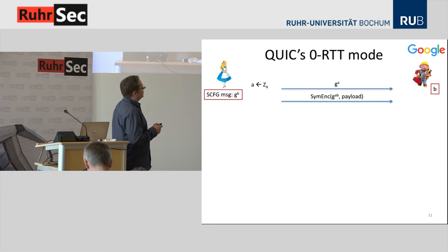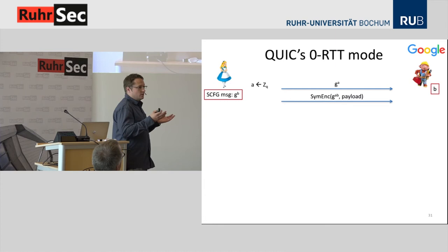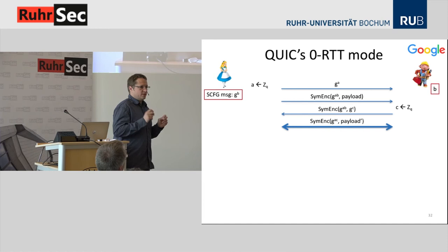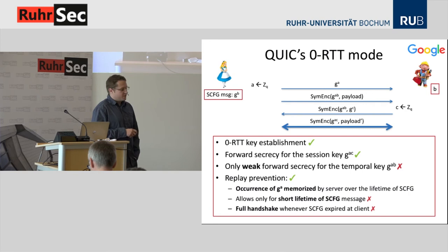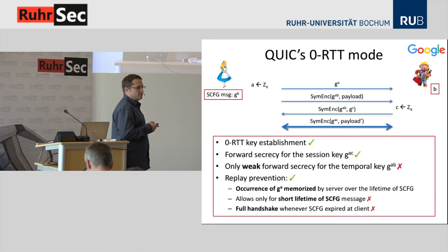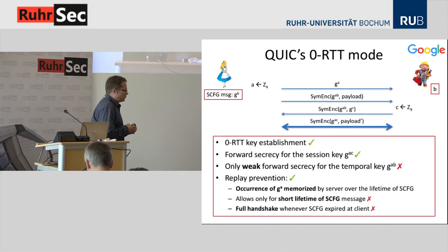This protocol obviously doesn't provide any forward secrecy, because if the NSA asks the server for exponent B, all security is lost. What QUIC additionally does is refresh the session key: when the server responds, it sends another value G^C encrypted under G^(AB), giving a new key G^(AC) used for the rest of the session. This refreshed key provides some form of forward secrecy. So QUIC achieves zero-round-trip-time key establishment, forward secrecy for the refreshed session key G^(AC), but only weak forward secrecy for the temporal key — holding only when the server has deleted B after the server configuration message's lifetime expires, which can be a couple of days.